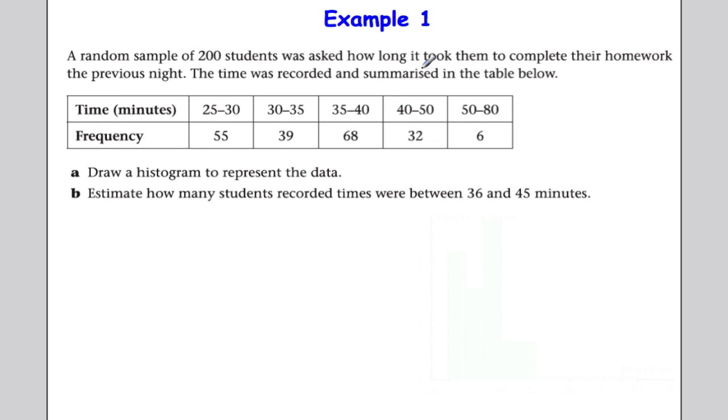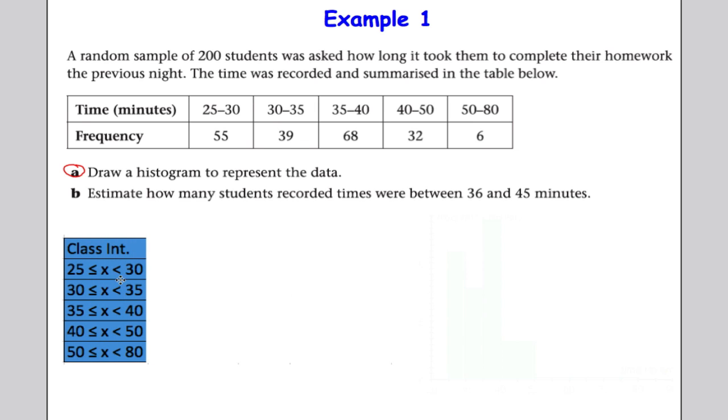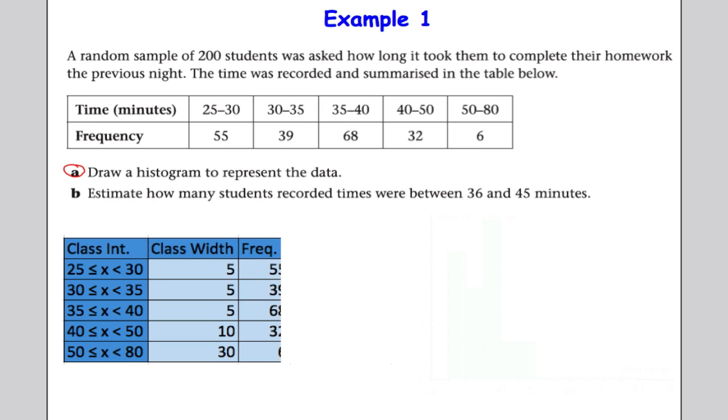Let's take a look at an example. We got 200 students asked how long it took them to complete their homework. The time is recorded and summarized in the table below. The first part asks us to draw a histogram. I'm going to do this fairly quickly. In order to draw the histogram, I need to build up a table. I've put all my class intervals: 25 to 30, 30 to 35, and so on. I've also written down the class widths because that's going to be important. I've written down the frequency for each one: 55, 39, 68, and so on. And I'm going to calculate the frequency density.